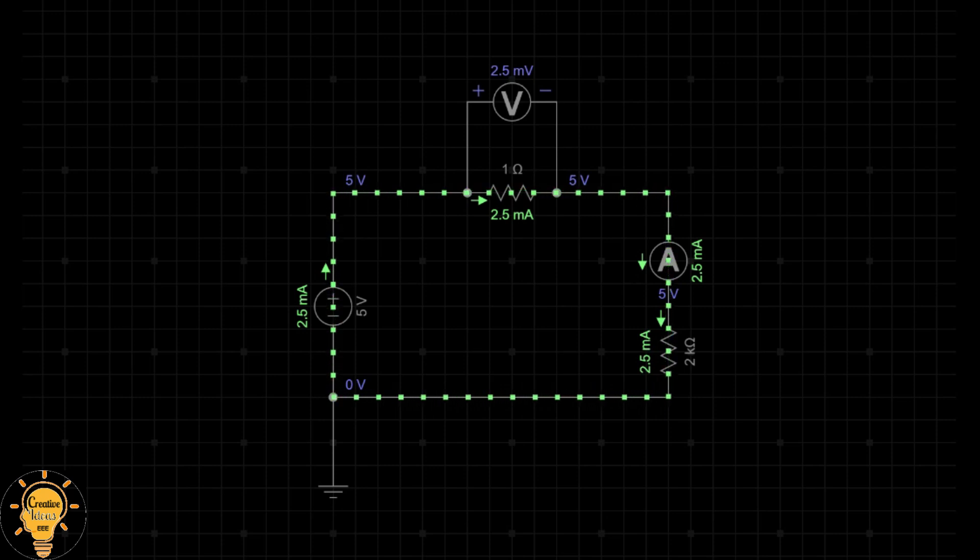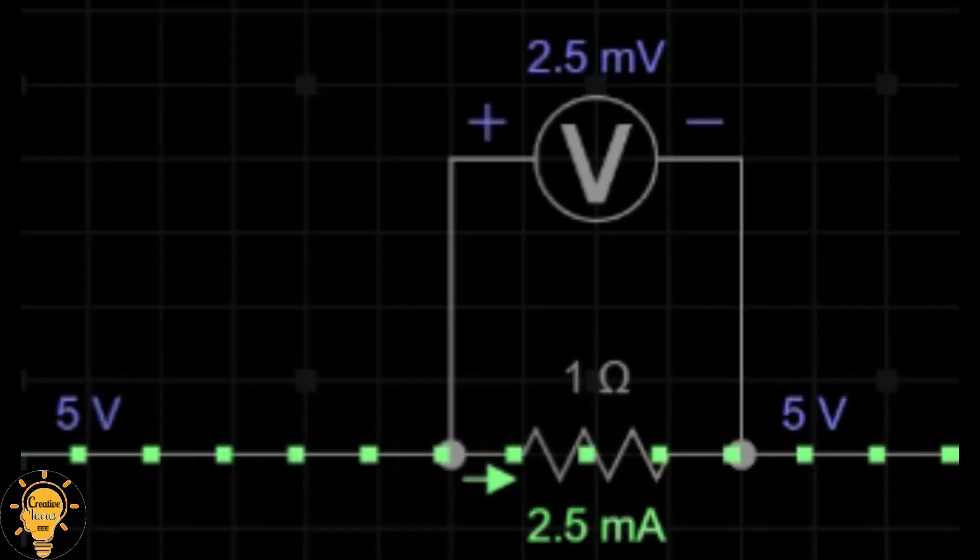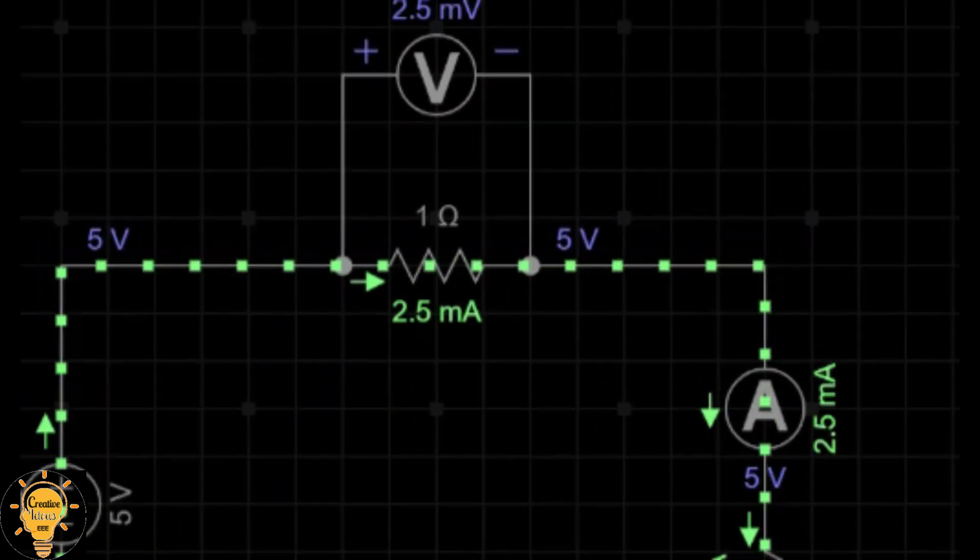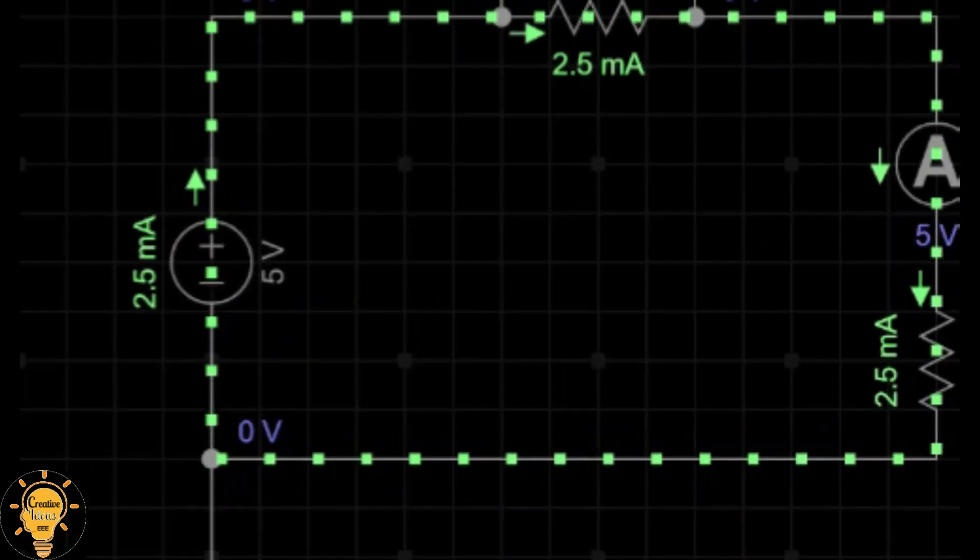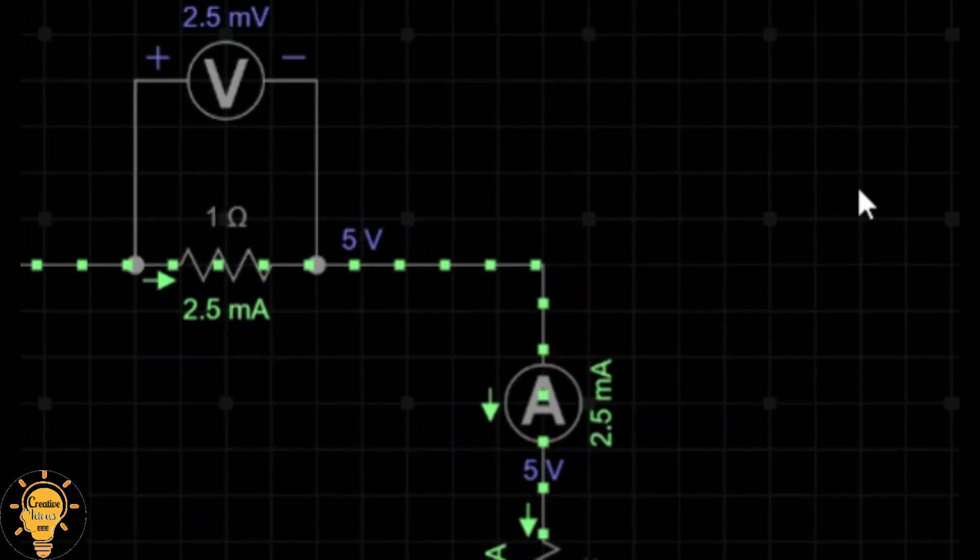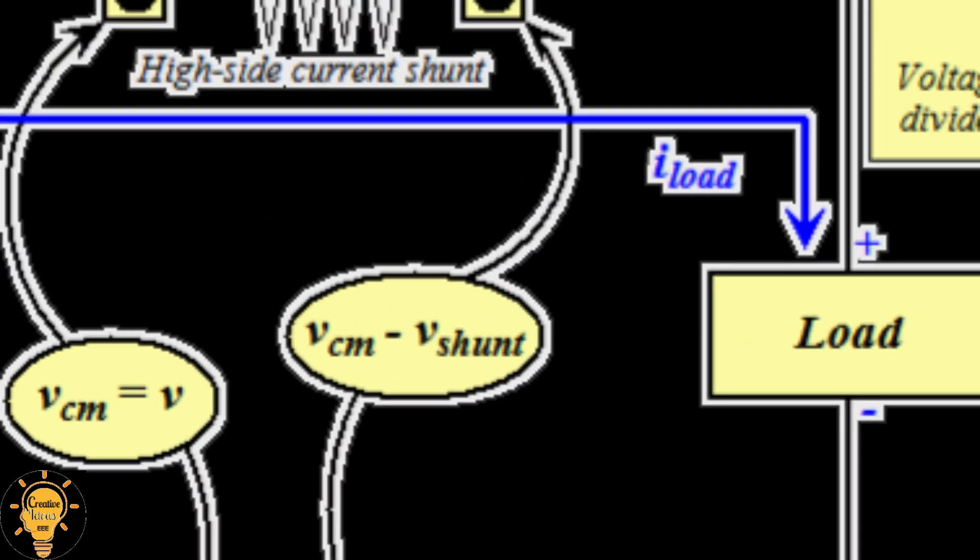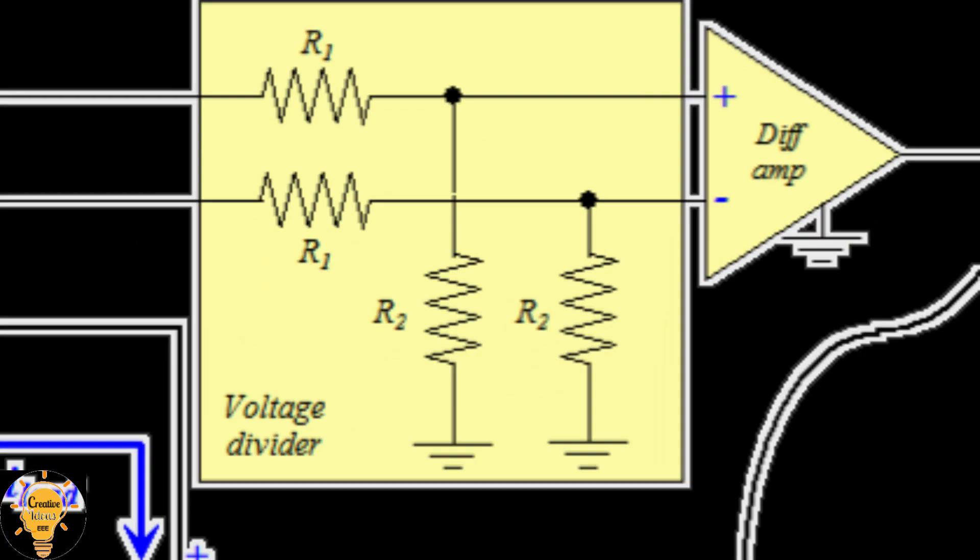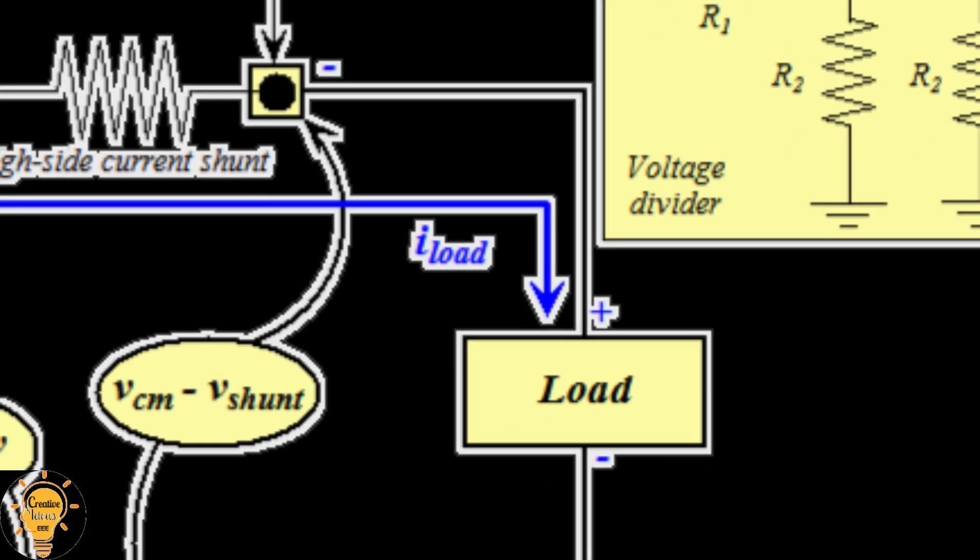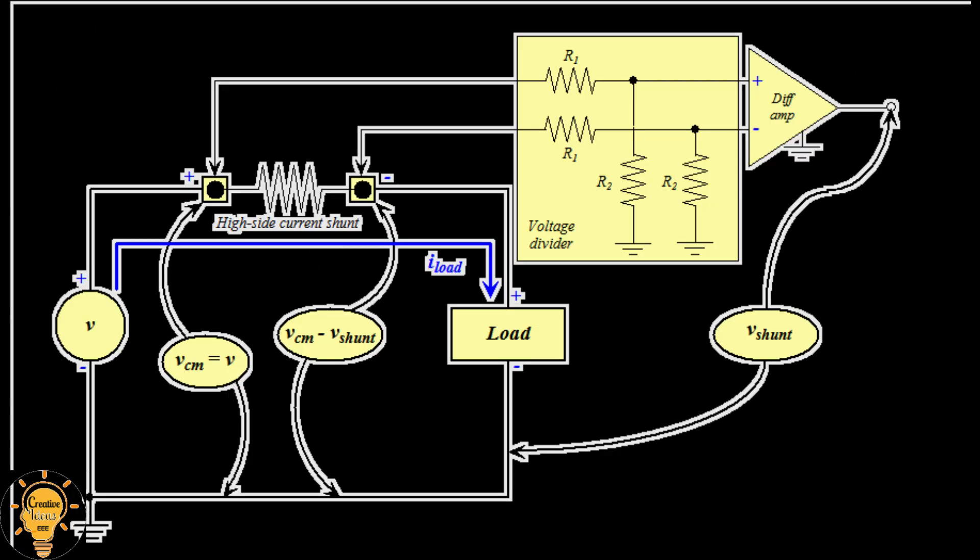We must use a shunt resistor to measure the current. We will be able to construct an overvoltage protection based on the value of the voltage across the shunt resistor. I will illustrate an example of overload protection here.